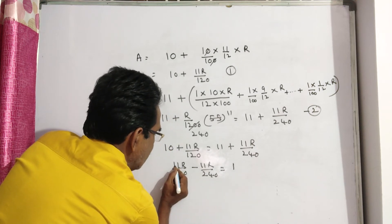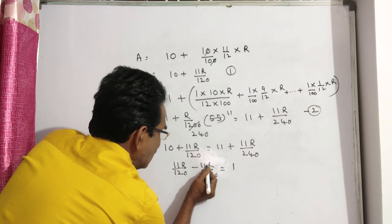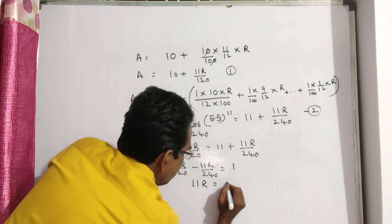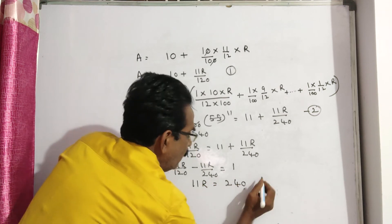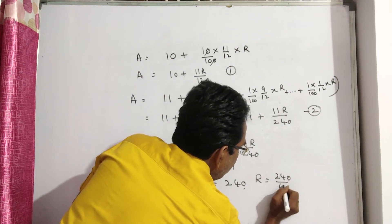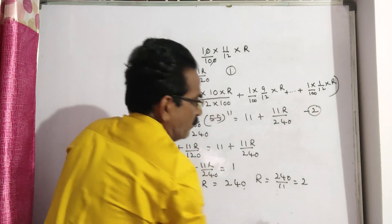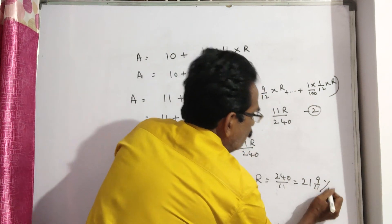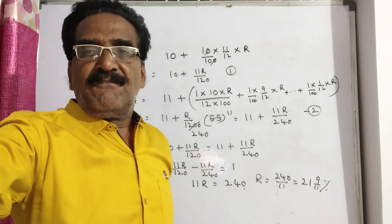Taking the LCM: 22R minus 11R equals 11R. So 11R equals 240. Therefore R equals 240 by 11, which is 21 and 9 by 11 percent. Thank you.